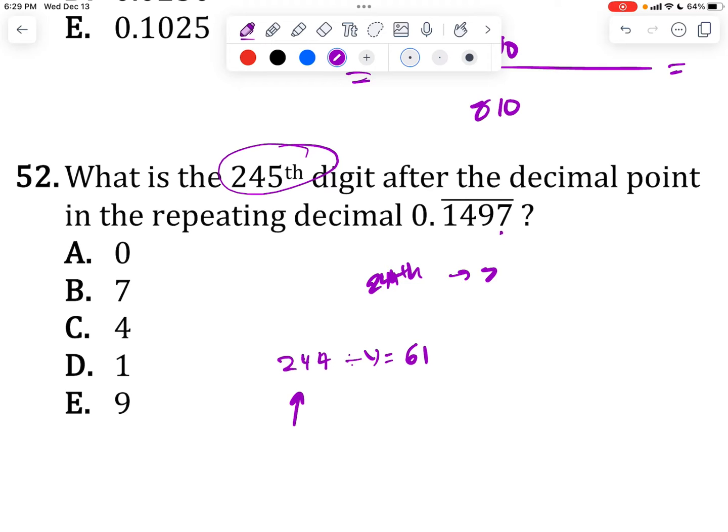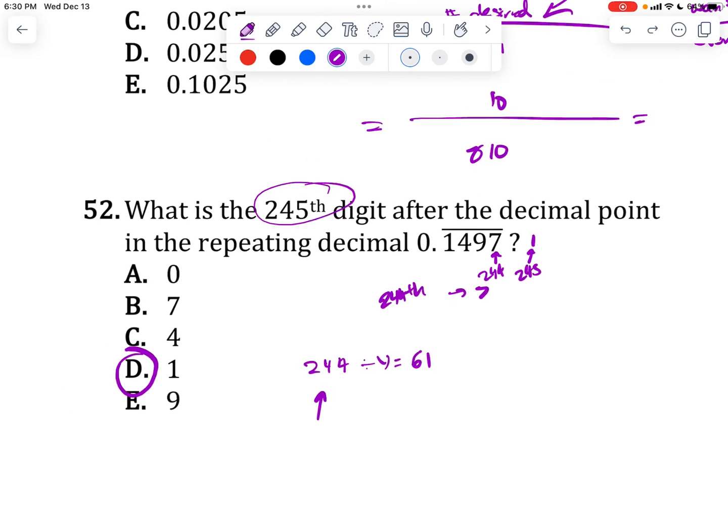That means that this number is a multiple of 4, which means the 244th value is 7. So if I just go one value over, this is 244, 245 would just be the next one here, which would be 1. So you use the pattern and you leverage the fact that a multiple of 4, as far as the nth digit from the decimal, is always going to be a 7. And that's how you get your answer here.